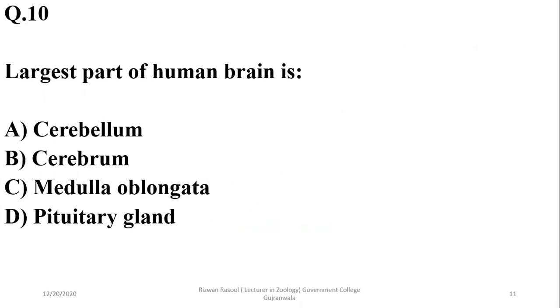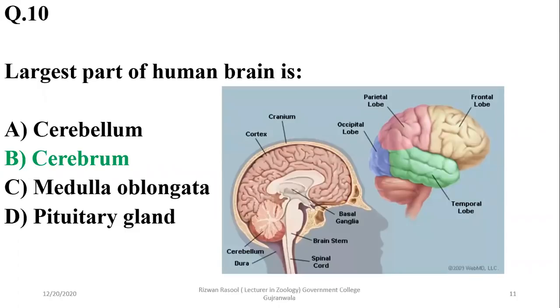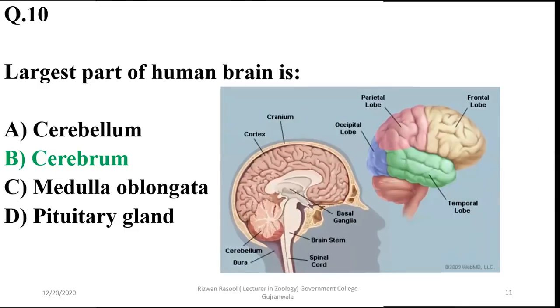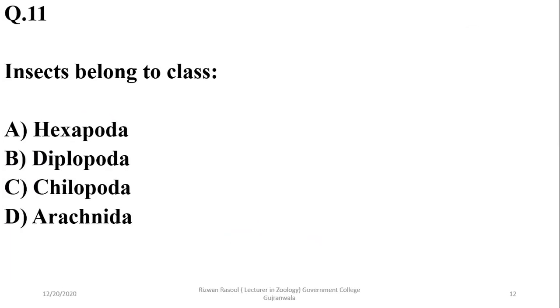Question 10: The largest part of the human brain is definitely the cerebrum — option B. Question 11: Insects belong to class Hexapoda.